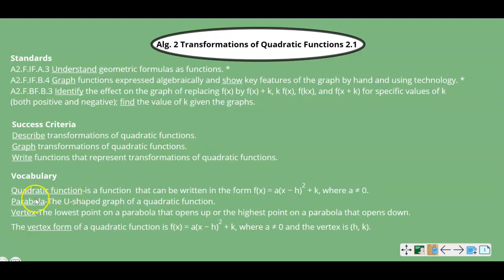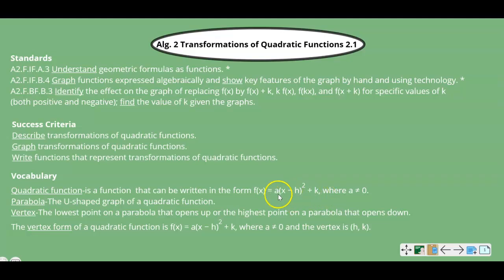So what are quadratic equations? A quadratic function is a function that can be written in the form f(x) = a times (x minus h) quantity squared plus k, where a is not equal to zero. If a is equal to zero, zero times anything is zero, and the quadratic comes from having a squared term. So if there's no quadratic term, it's not quadratic. So there must be an a — it can be positive or negative, but it can't be zero.